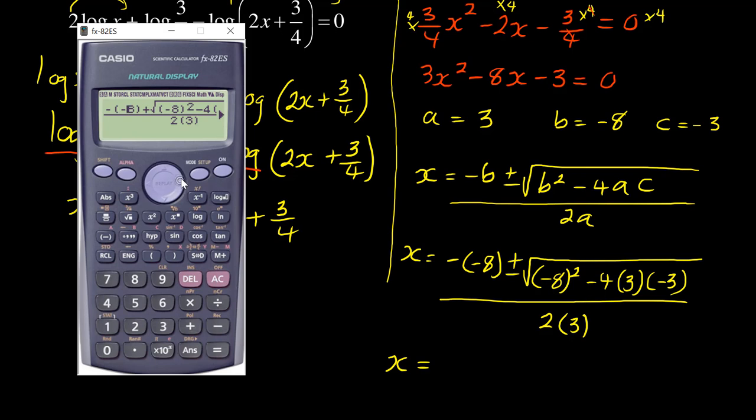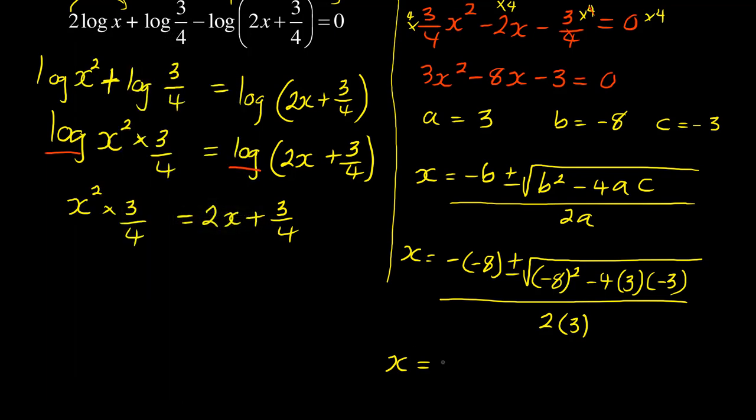When it's positive, x equals 3, and when it's negative, x equals negative 1 over 3. So I have x equals 3 or x equals negative 1 over 3. Now I can take these values and prove them with my calculator.